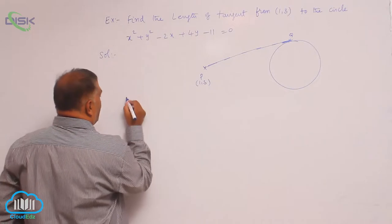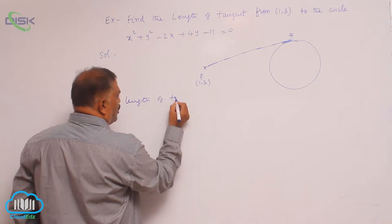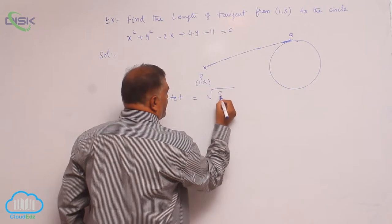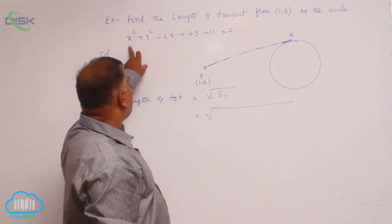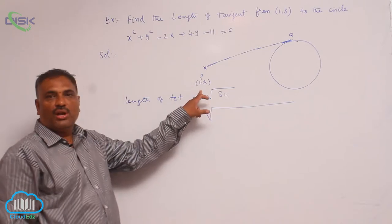Now length of tangent, we know the formula: root of S₁₁, square root of wherever x comma y is, there substitute the point (1, 3).